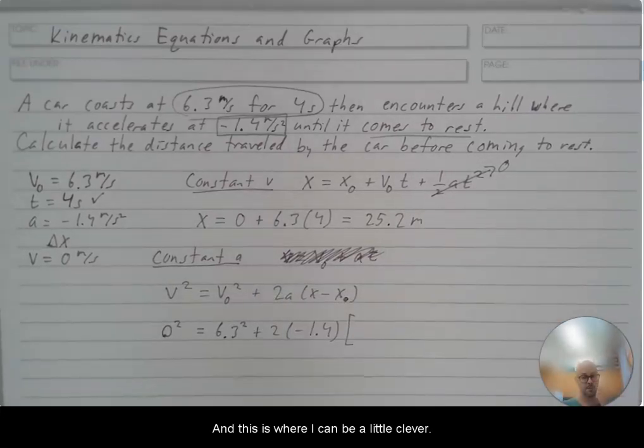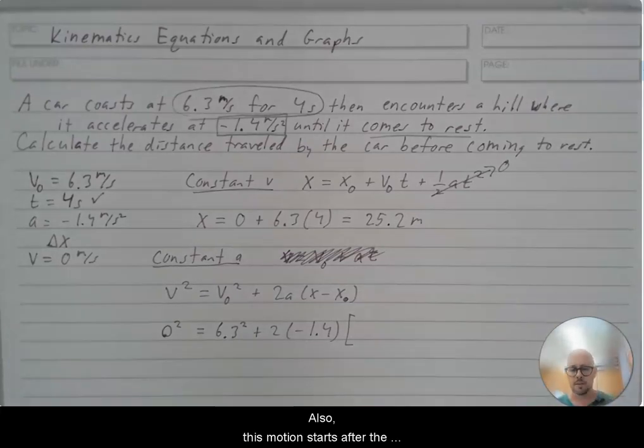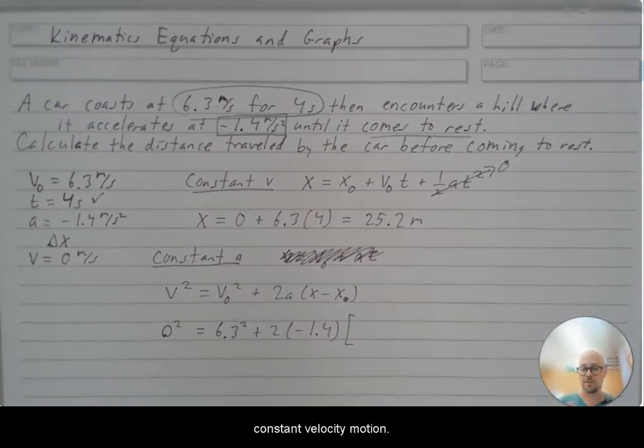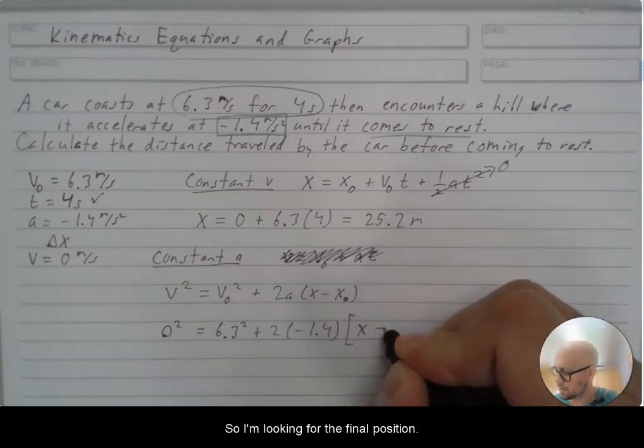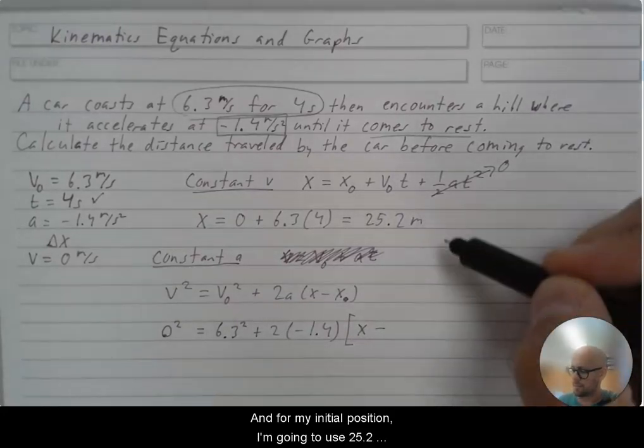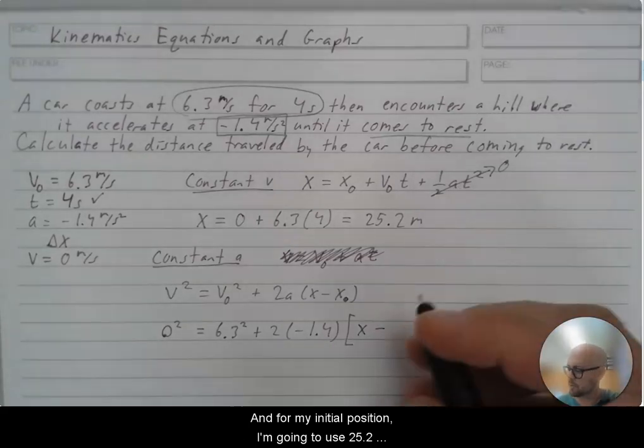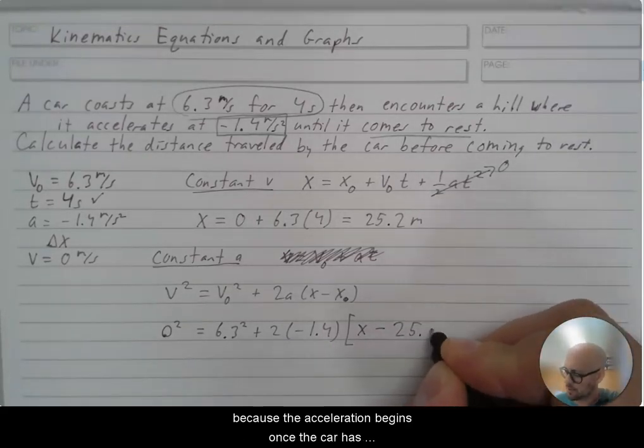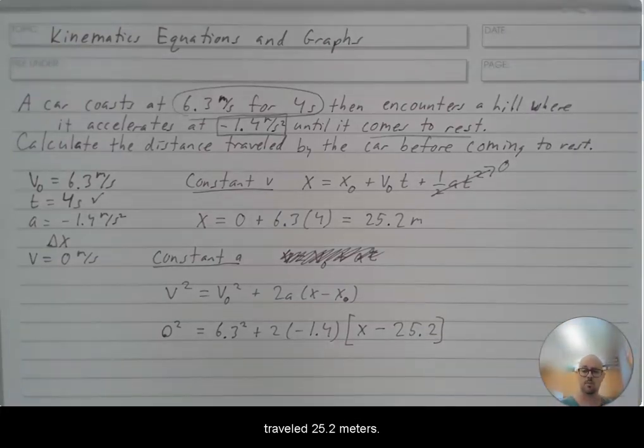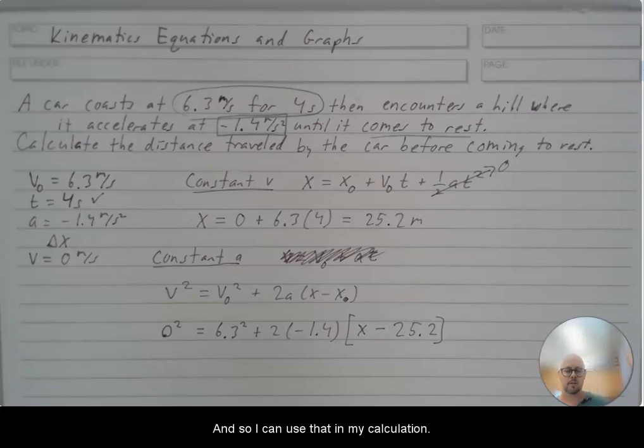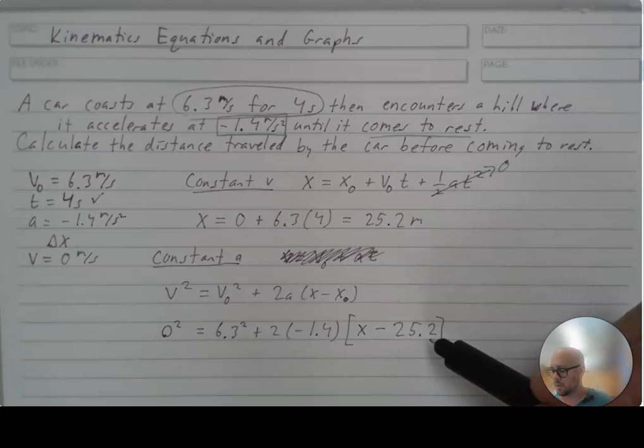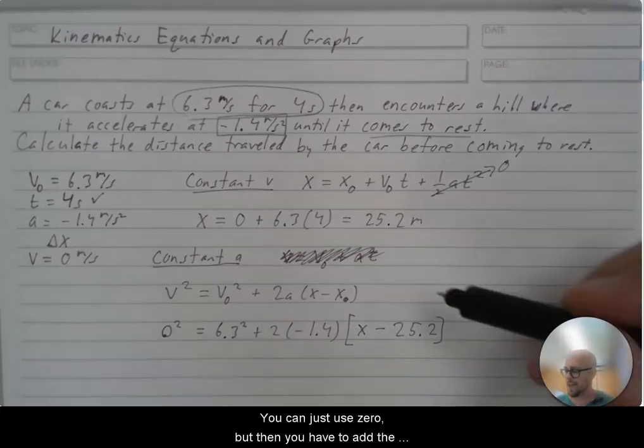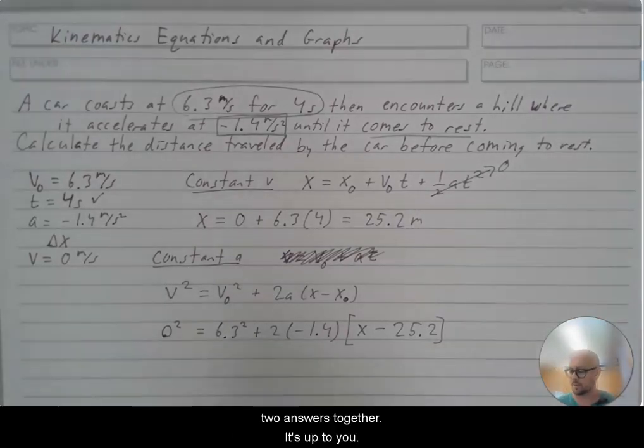And this is where I can be a little clever also. This motion starts after the constant velocity motion. So I'm looking for the final position. And for my initial position, I'm going to use 25.2 because the acceleration begins once the car has traveled 25.2 meters. And so I can use that in my calculation. You don't have to. You can just use zero, but then you have to add the two answers together. It's up to you.